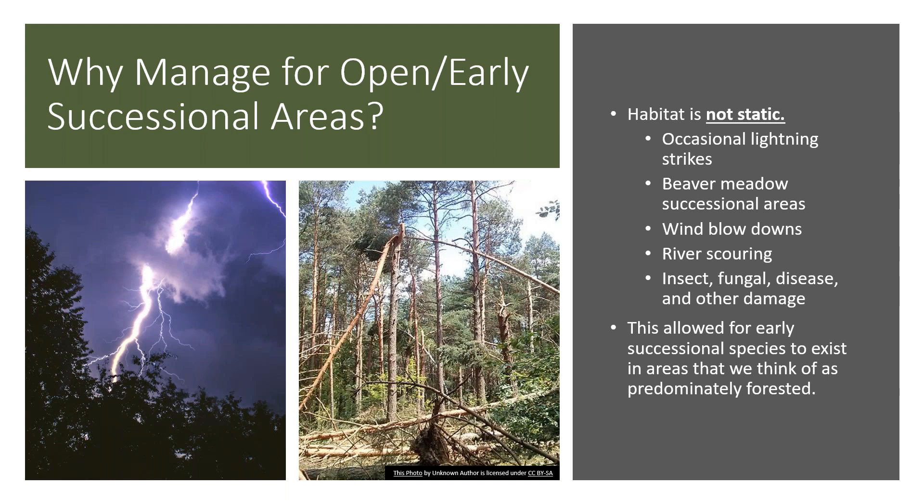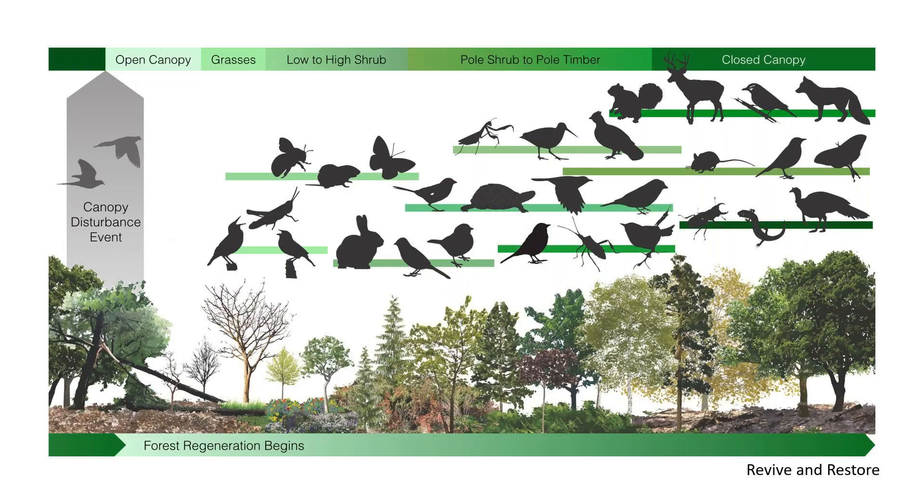Things like fires from occasional lightning strikes, beaver impoundments that would eventually become abandoned and become wet meadows over time, wind storms, river scouring, damage from insects, fungus, and other diseases would all allow these early successional habitats to exist on the landscape. And this allowed for these species to thrive here in the eastern United States.